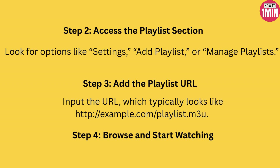Step three is to add the playlist URL. Enter your URL or login details. For an M3U playlist, input the URL which typically looks like a standard streaming link. If you are using a service code or login credentials, enter those as prompted. After entering the details, confirm and save the playlist, then wait a moment as IBO Player loads the channels or content.